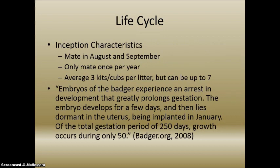They generally mate in August and September, only once per year, and have an average of three kits or cubs per litter, but can have up to seven. Something unique about the life cycle is that once they mate, the embryos experience an arrest in development that greatly prolongs gestation — the embryo develops for only a few days, then lies dormant in the uterus before being implanted in January. Of the total gestation period of 250 days, growth only occurs around 50 days.